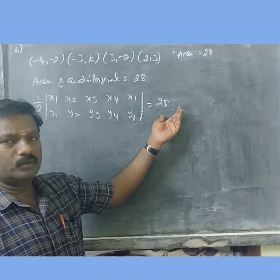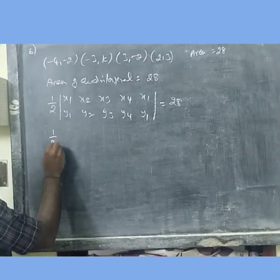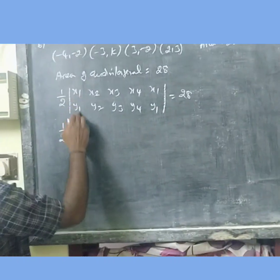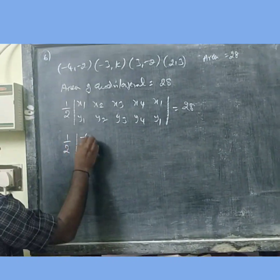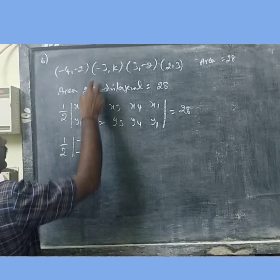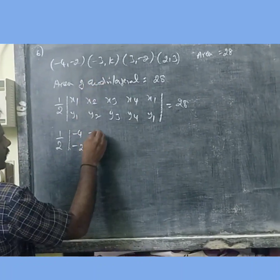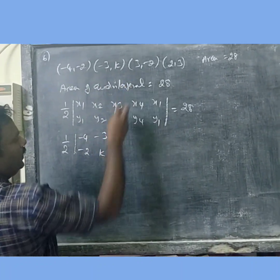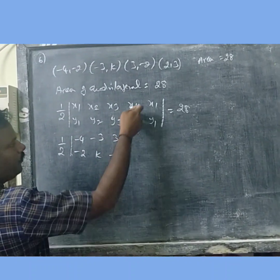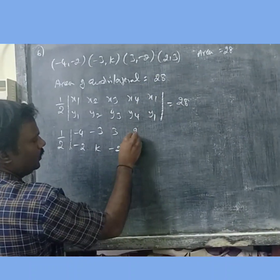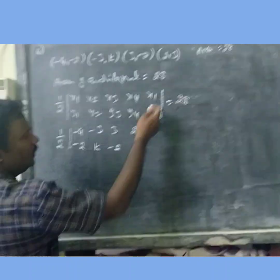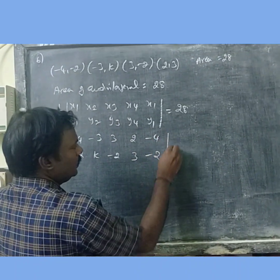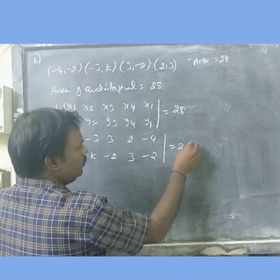The coordinates are: x1y1 is (-4, -2), x2y2 is (-3, k), x3y3 is (-2, -3), and x4y4 is (-4, -2), and this is equal to 28.